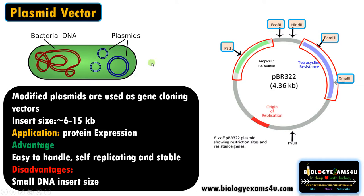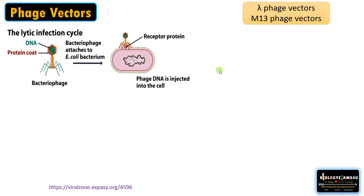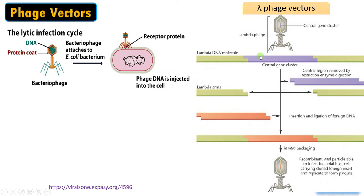The next vector is phage vectors. Bacteriophages are viruses that attack bacteria. The most common ones are lambda phage vectors and M13 phage vectors. This phage attaches to the bacterial surface and injects its phage DNA; if it is a lysogenic cycle, it will integrate into the bacterial genome. In lambda phage vectors, there is a region of the lambda DNA molecule that is not essential for phage infection and replication inside the host, and that region is replaced with our gene of interest.